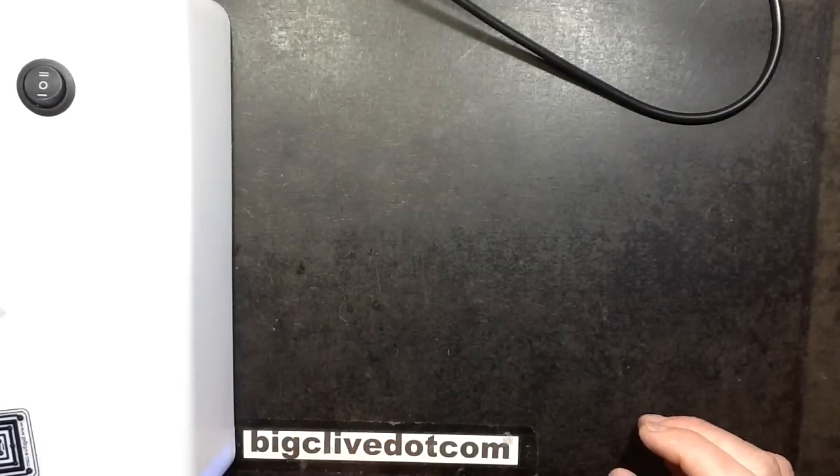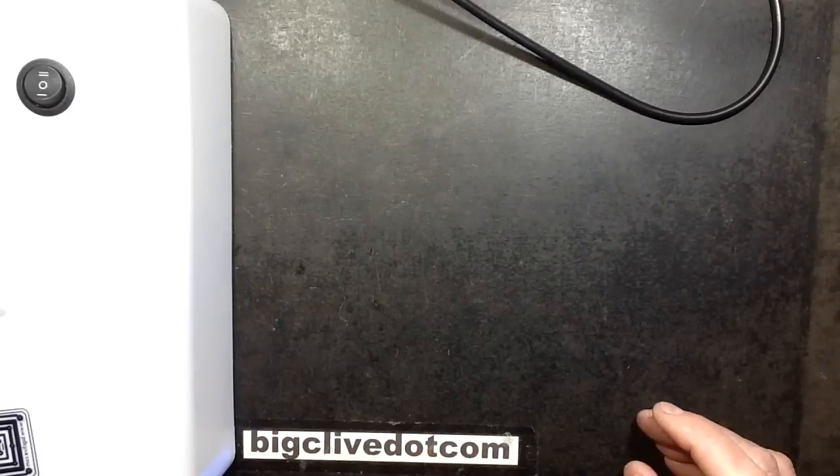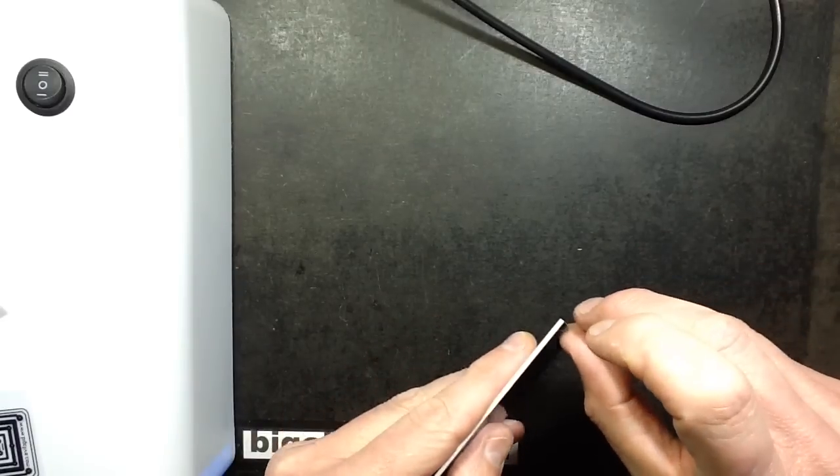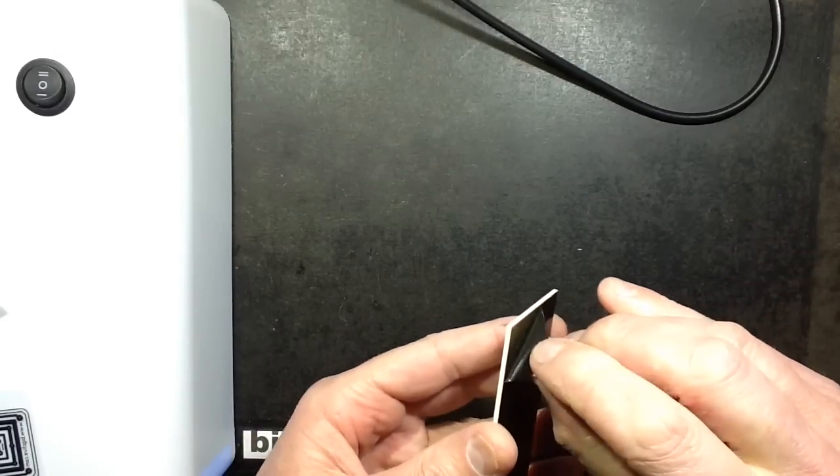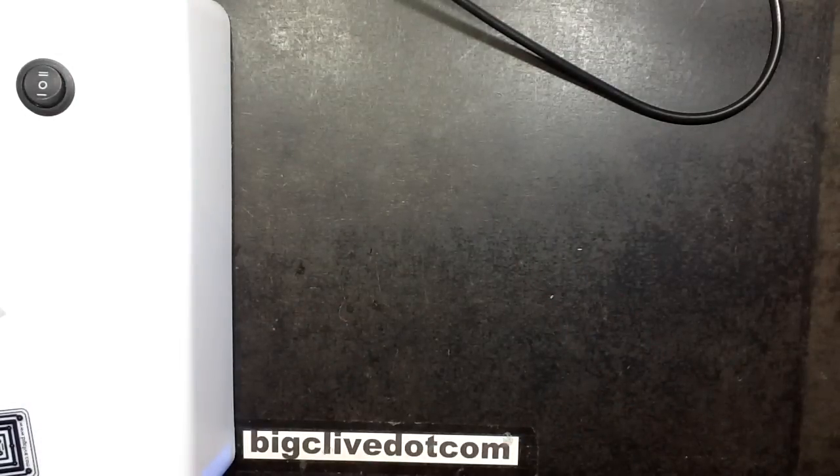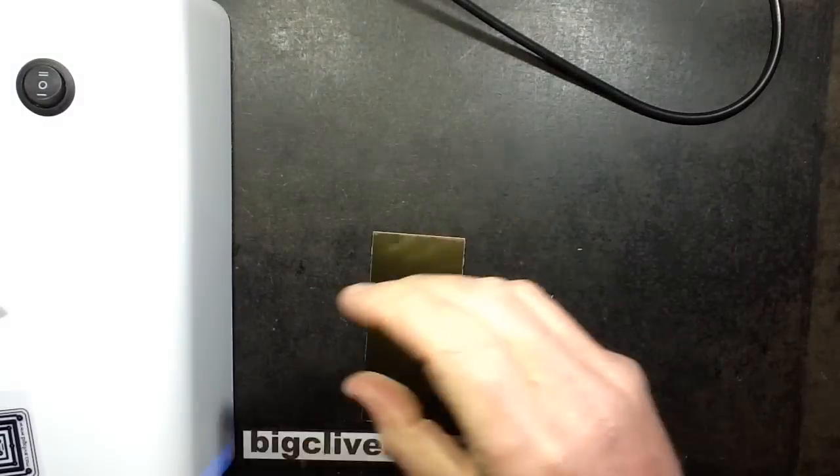It's time for some more printed circuit board transparency tests because I've found a new type of material. Let's get the photosensitive laminate, I'm going to peel it, and I've made up three transparencies.